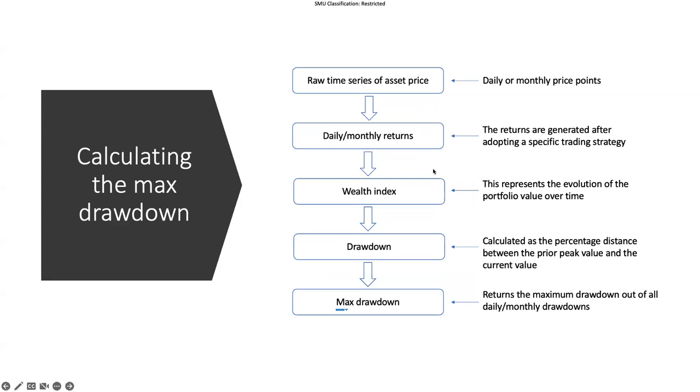Then we formulate the so-called wealth index. This represents the evolution of our portfolio value over time. So you have one dollar in my account at day one, how does it evolve if I follow specific strategy across time?